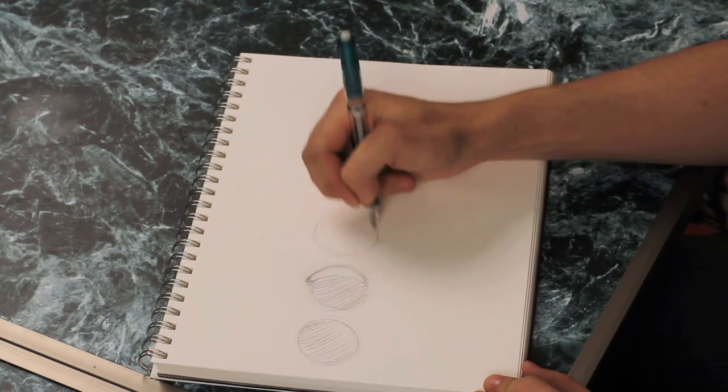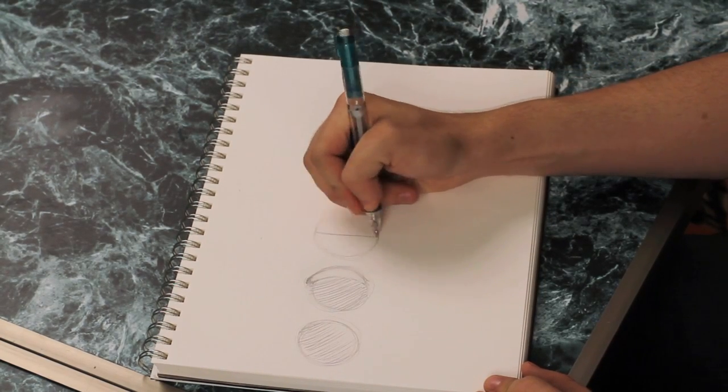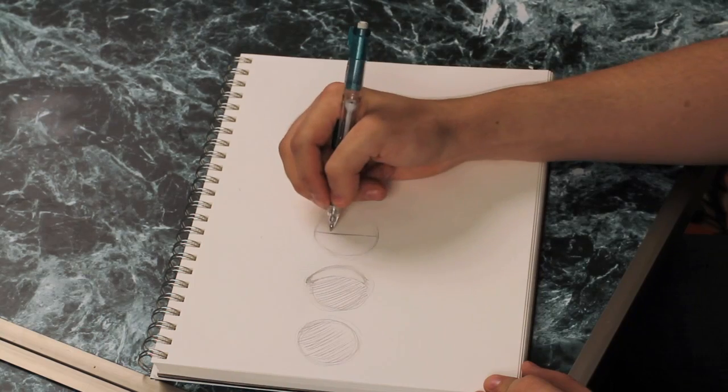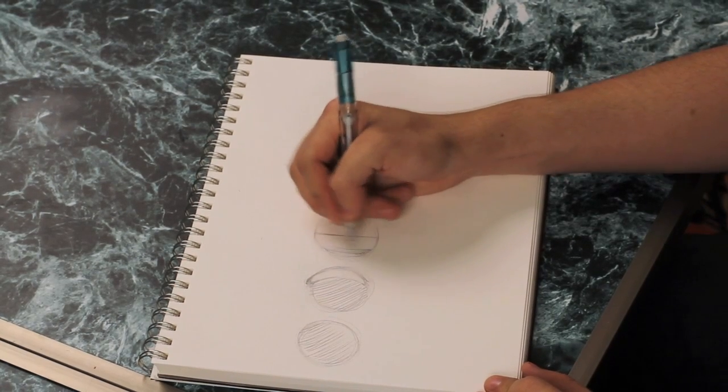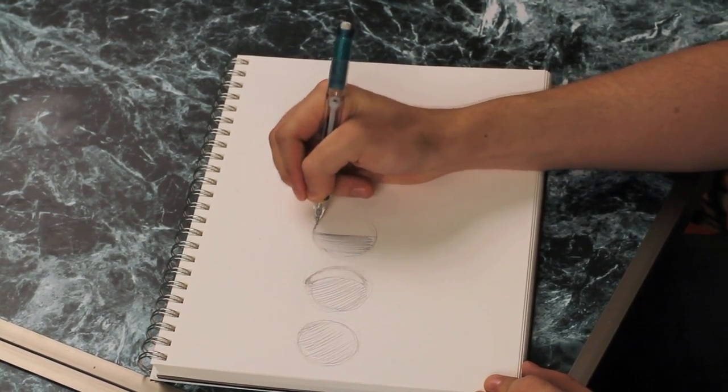Next we have the first quarter, which is half of the moon being visible. We'll draw a line straight down the center. Half of it is going to be covered and now half is visible.